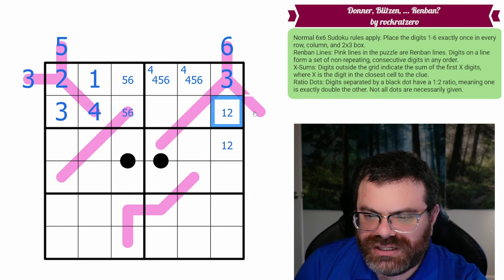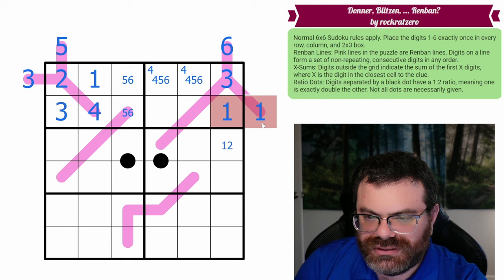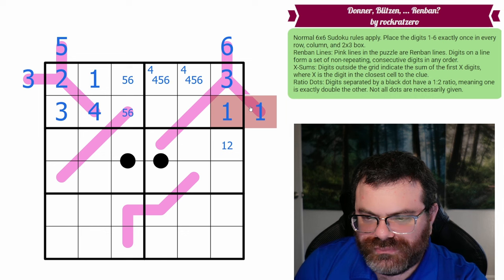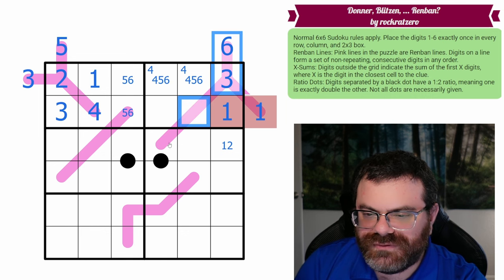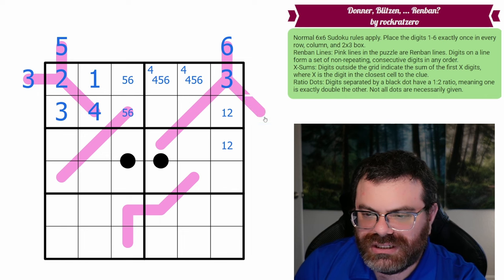Can this be 1 and 1? No, because it's 6, 5, 4, 3, 2. Yeah, I can't put a 1 on this Renband at all. So this can't be a 1. This is 2 and 1.